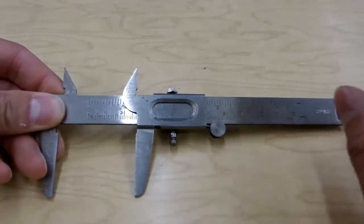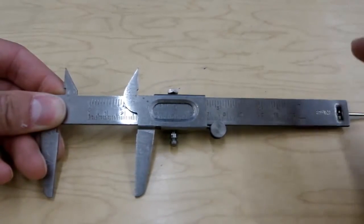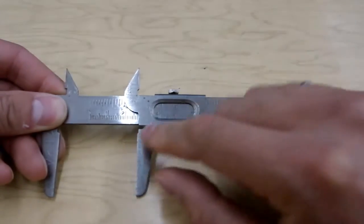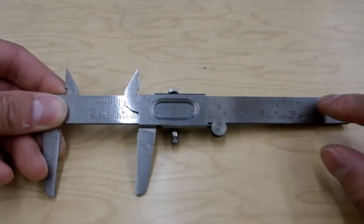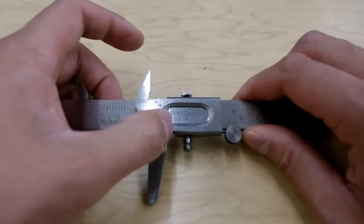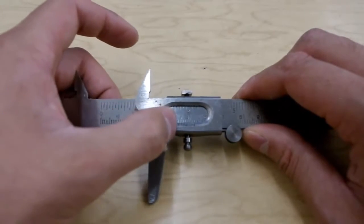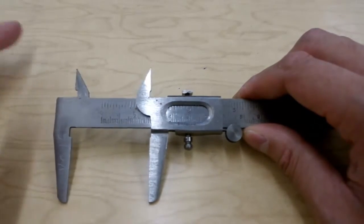Now, the first two digits, meaning your centimeter and your millimeter digits, you will read from the regular ruler. But where do you read it? You read it right on all these lines on the bottom here. You read from the left most line.